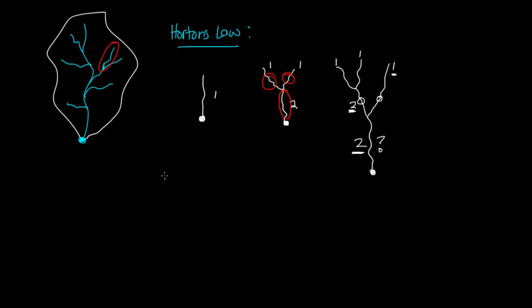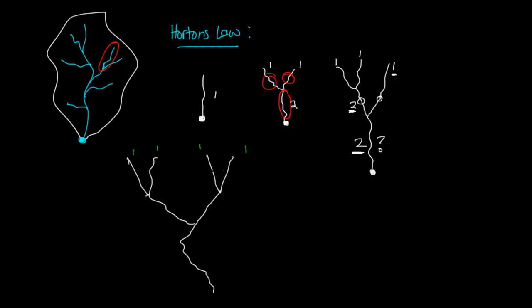In an even more complex example, you have streams on the outside — all priority number one. Where a one and a one meet, they make priority number two. Where a two and a two meet, that makes a three. Any time you have two streams that come together at the same priority, they bump up to the next order. A one and a one meet to make a two; a two and a two come together to make a three, and so on. That is the law — pretty simple.